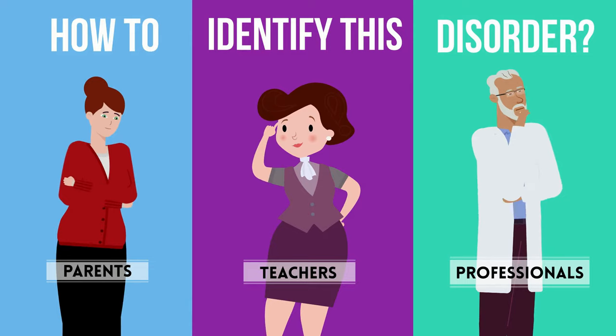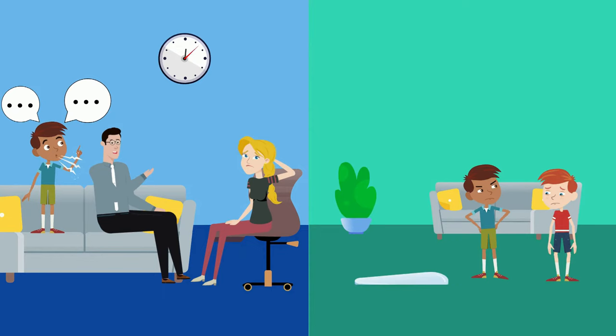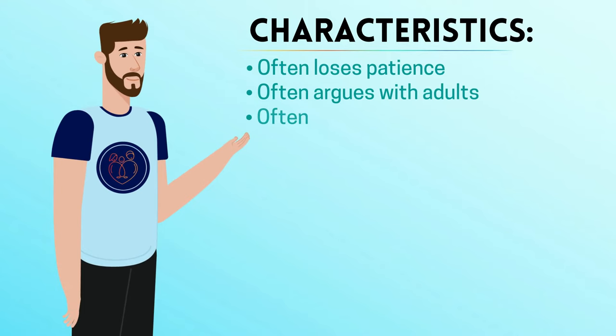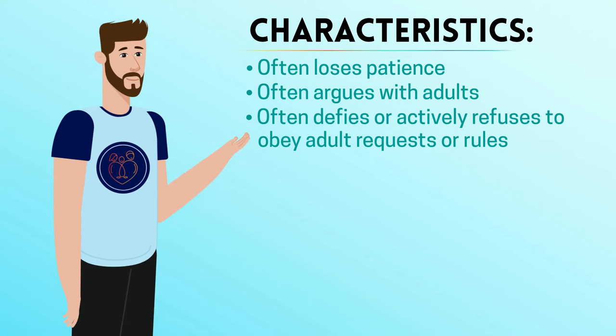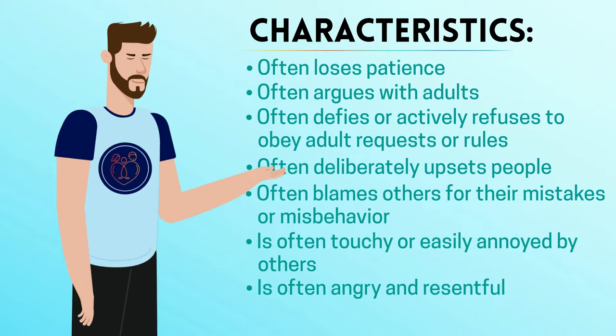According to the American Psychiatry Association, the diagnostic criteria are the following: a pattern of negative, hostile, and defiant behavior that lasts for at least six months, during the majority of which the following characteristics are present — often loses patience, often argues with adults, often defies or actively refuses to obey adult requests or rules, often deliberately upsets people, often blames others for their mistakes or behavior, is often touchy or easily annoyed by others, is often angry and resentful, or is often spiteful or vindictive.